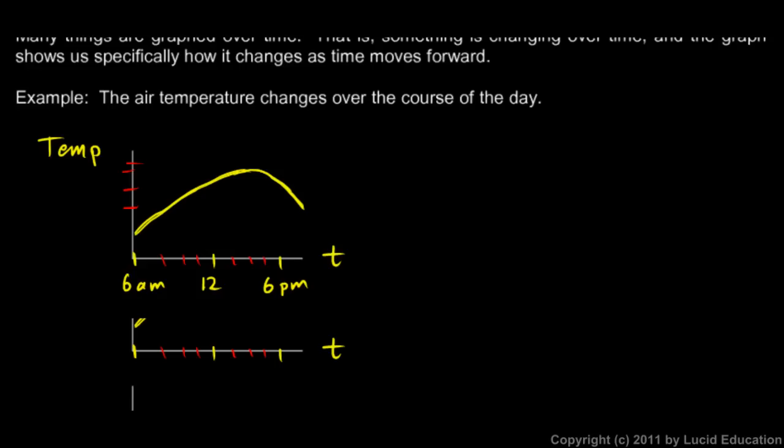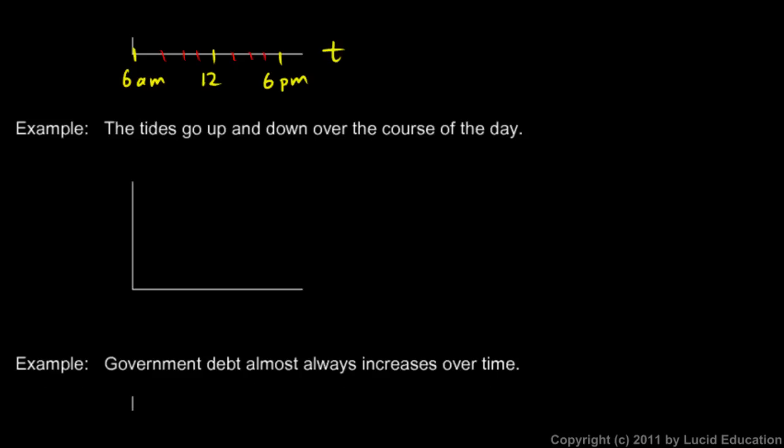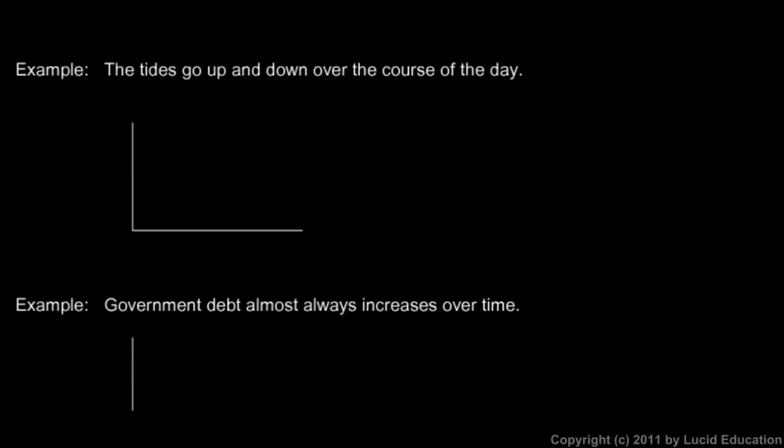Let's look at another example. The tides go up and down over the course of the day. So I grew up on the coast, and the tides typically go up and down about every 12 hours, a little more than every 12 hours. So if this is midnight, and 6 a.m., and noon the next day, and 6 p.m., so again we have time here. And this would be the height of the water.